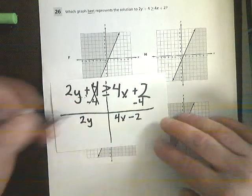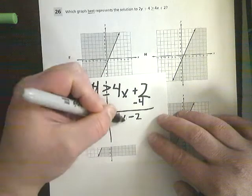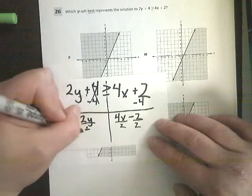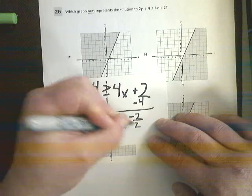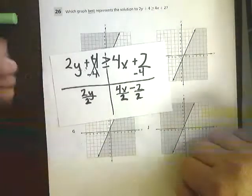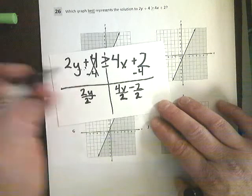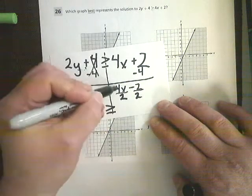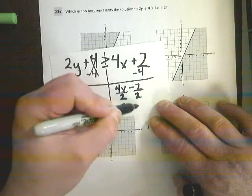Now, I can't do 2y. I've got to do y by itself. I'm going to divide by 2. The thing is, when I have multiple terms over here, I have to divide everything by 2. That's what that looks like. Since I'm dividing by a positive, this greater than or equal to sign is going to stay. Those cancel. 4 divided by 2 is 2x minus 1.